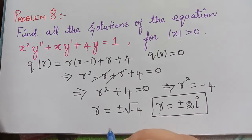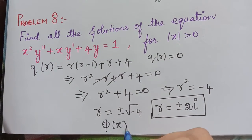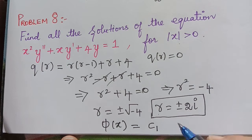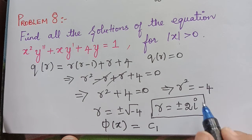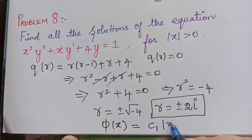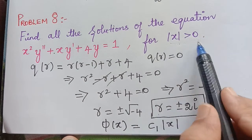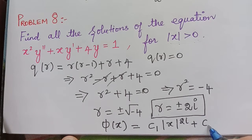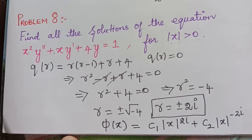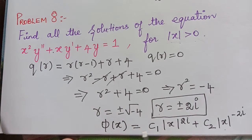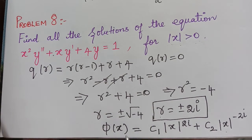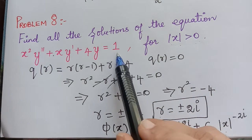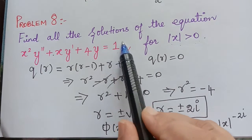With roots plus or minus 2i, the homogeneous solution is φ(x) = c₁ |x| to the power 2i plus c₂ |x| to the power negative 2i. Here we write modulus of x because the problem specifies modulus of x greater than 0. Next, we find the particular integral ξₚ(x) for L(y) = 1.